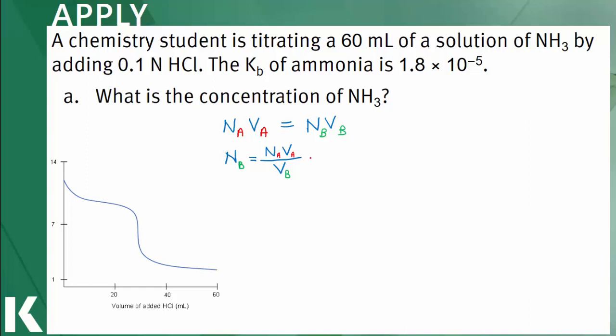The normality of hydrochloric acid is 0.1 normal, but the volume of acid isn't given in the question stem. Instead, using the titration curve, the equivalence point is demarked by the inflection point, and extrapolating down, you can see that it took 30 mL of hydrochloric acid to neutralize the ammonia. Divided by the volume of ammonia given to us in the question stem, which is 60 mL, the normality of ammonia is 0.05 normal.